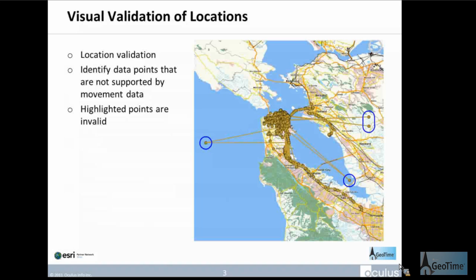For data validation — quite often when we're looking at GPS data, we're either looking at it in a 2D view or in a tabular format. One of the things that visualization is able to do quickly and easily is allow us to identify points that obviously do not belong in our data. Looking at the image on the right-hand side, we can clearly see there are about four data points highlighted in blue that clearly don't belong.